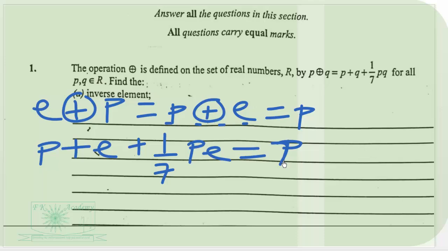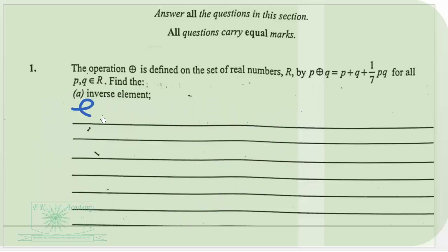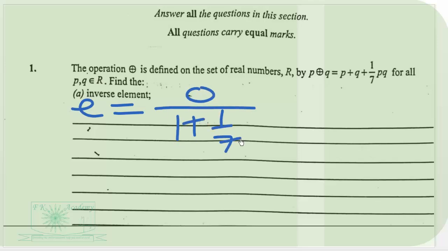We subtract P from both sides and factor E to get E(1 + (1/7)P) = 0. So the identity element E = 0 divided by (1 + (1/7)P), which gives us 0. Now that we know the identity element is 0, we can find the inverse of P.